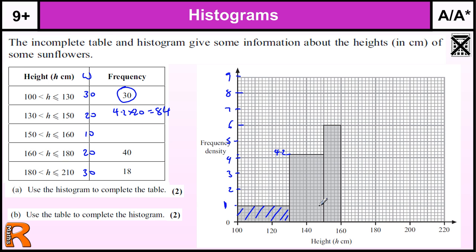So the frequency of that bar must be 84. And this bar is 6 high, and it is 10 wide. So 6 high times by 10 is 60. So the frequency of that bar is 60.